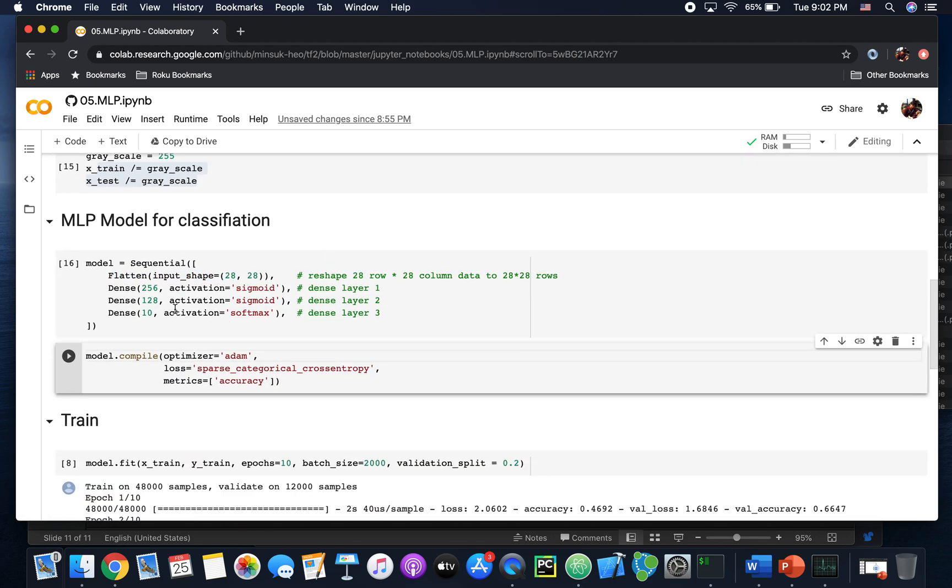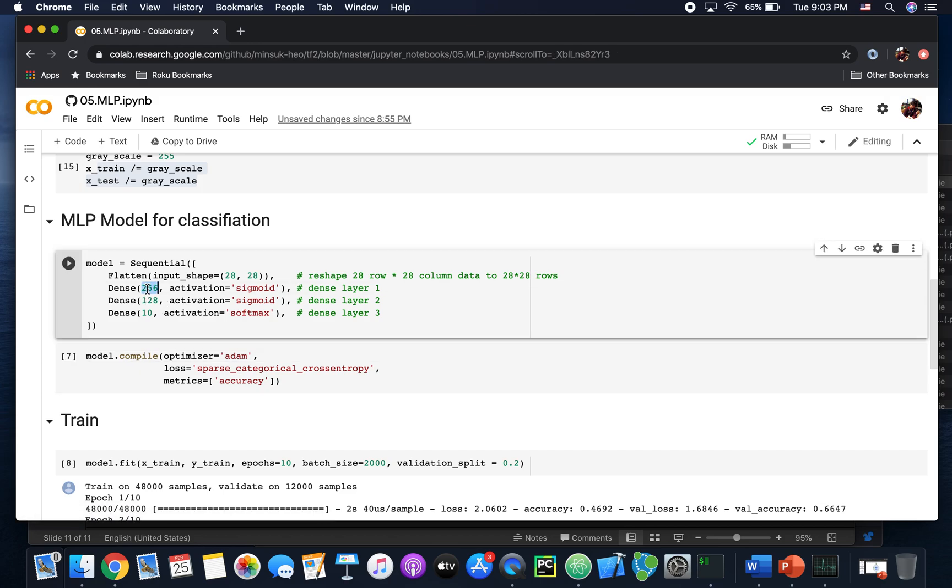My model is just getting the flatten data. First dense layer has 256 nodes in it. Second dense layer has 128 nodes in it. And the last layer has 10 nodes because MNIST data level is 0 to 9. That means we need 10 nodes at the last node. The first and second dense layers use sigmoid function, and the last dense layer uses softmax.